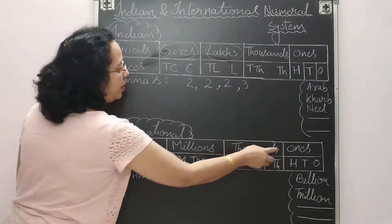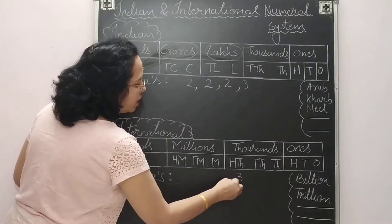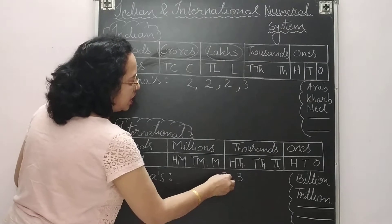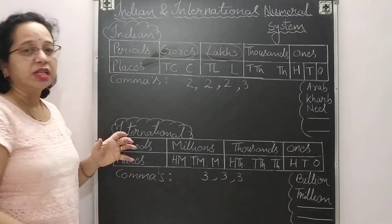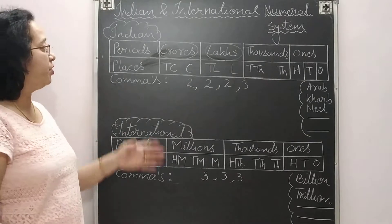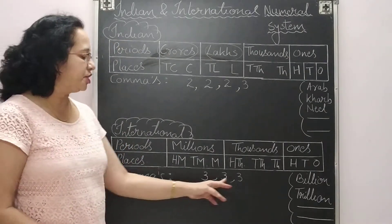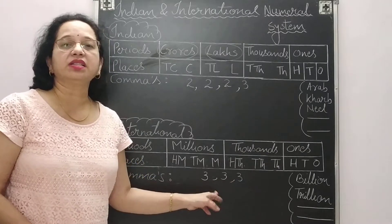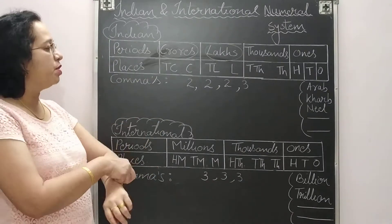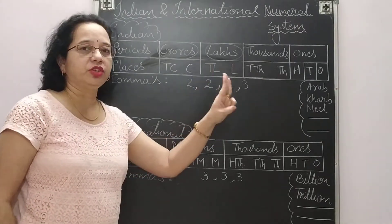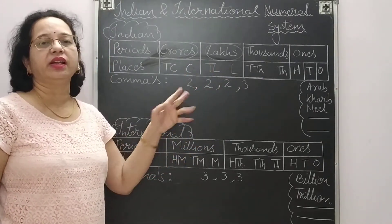In each period of the international number system, we have three places. So the first comma comes after three digits, then again after three digits, then again after three digits. This is the key difference: in the international number system all commas come after three digits, but in the Indian number system the first comma comes after three digits, then two digits, then two digits, then two digits.